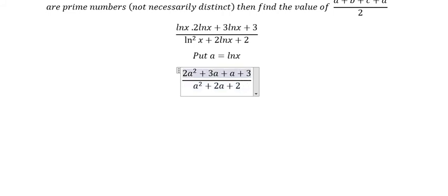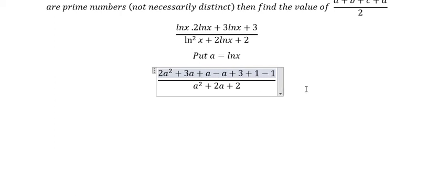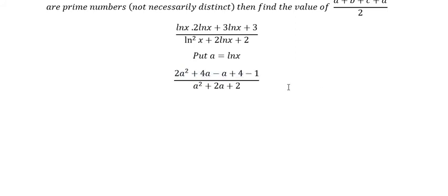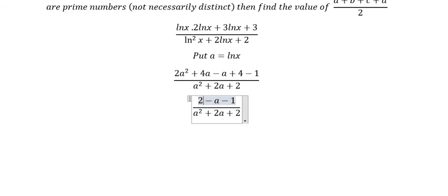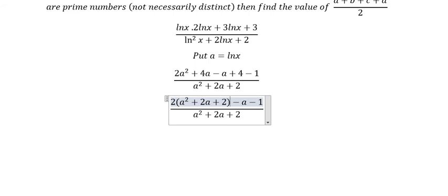The denominator becomes a² + 2a + 2. We put 1·a² + a, then connect to minus a, giving number 1 minus 1. For 3a + a we get 4a, and 3 + 1 gives number 4. We can do factorization with number 2, and dividing gives number 2 here.